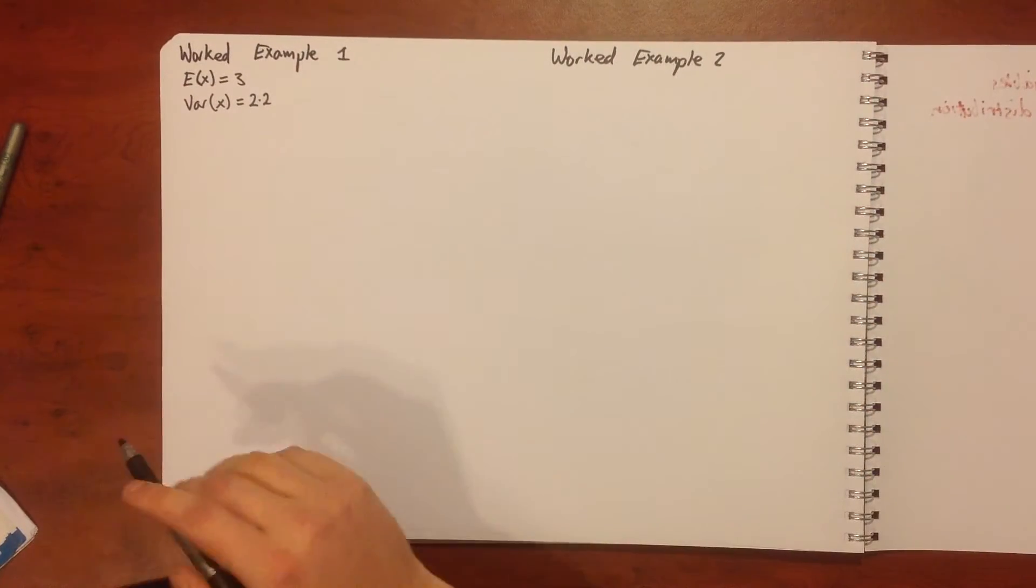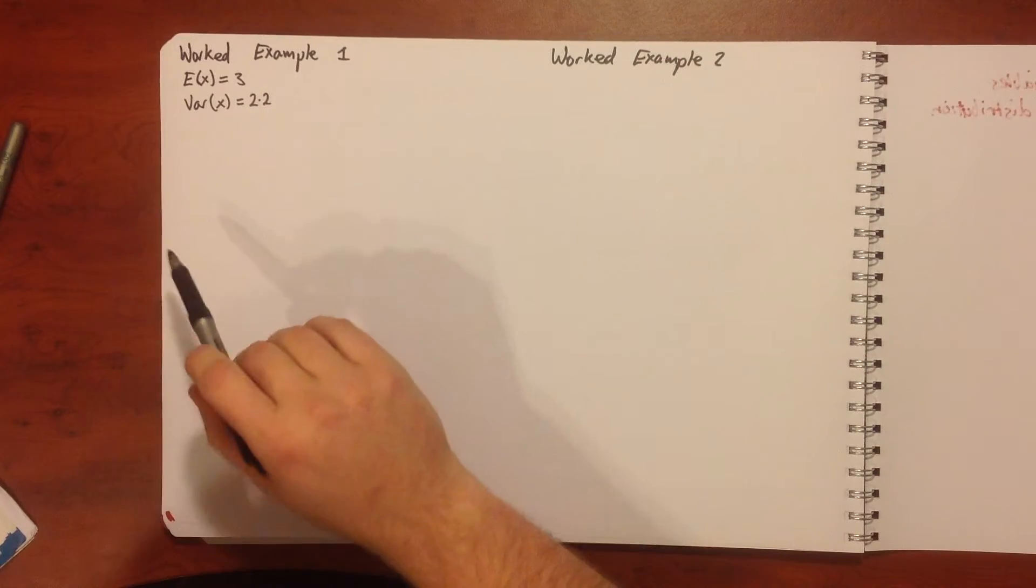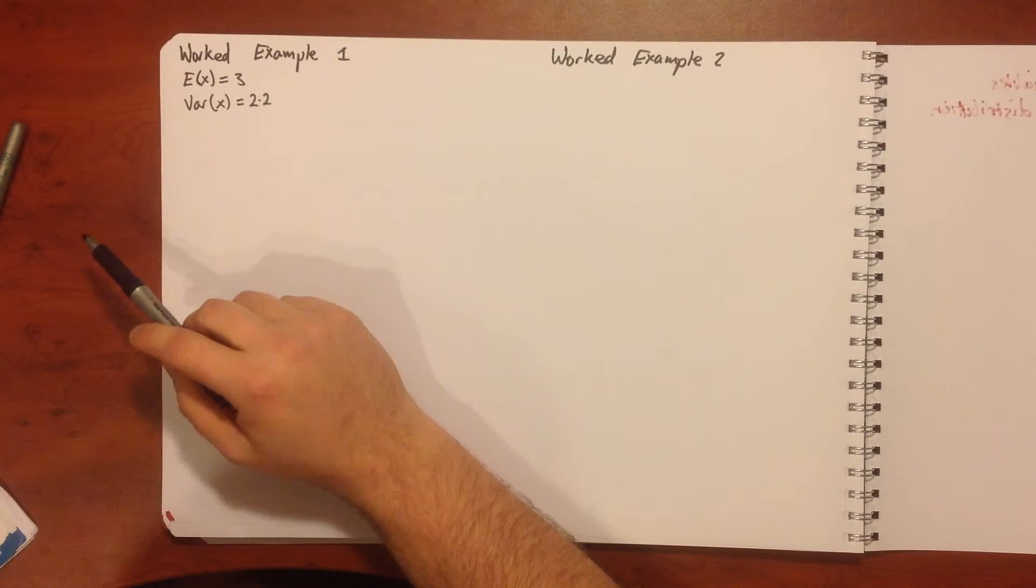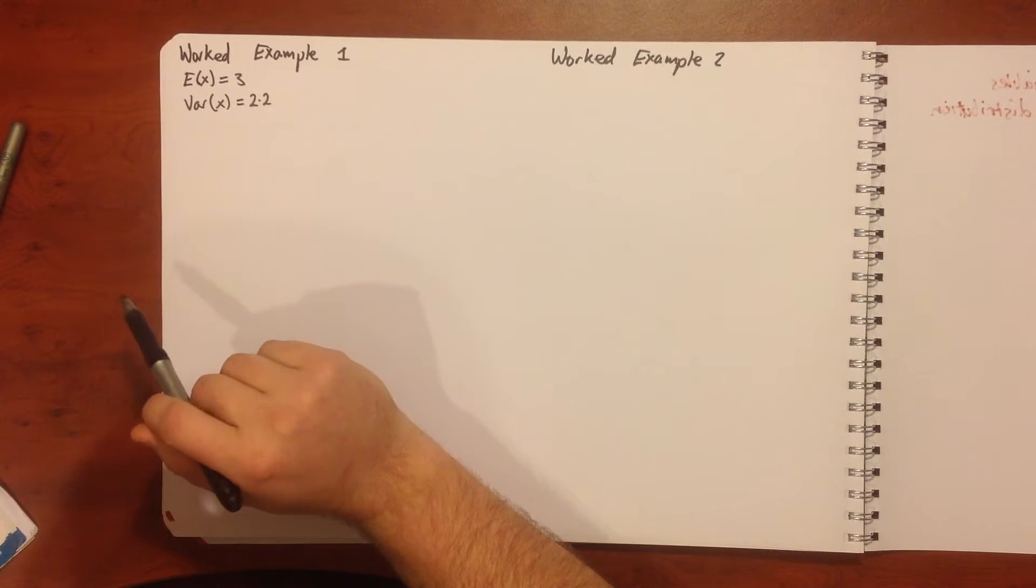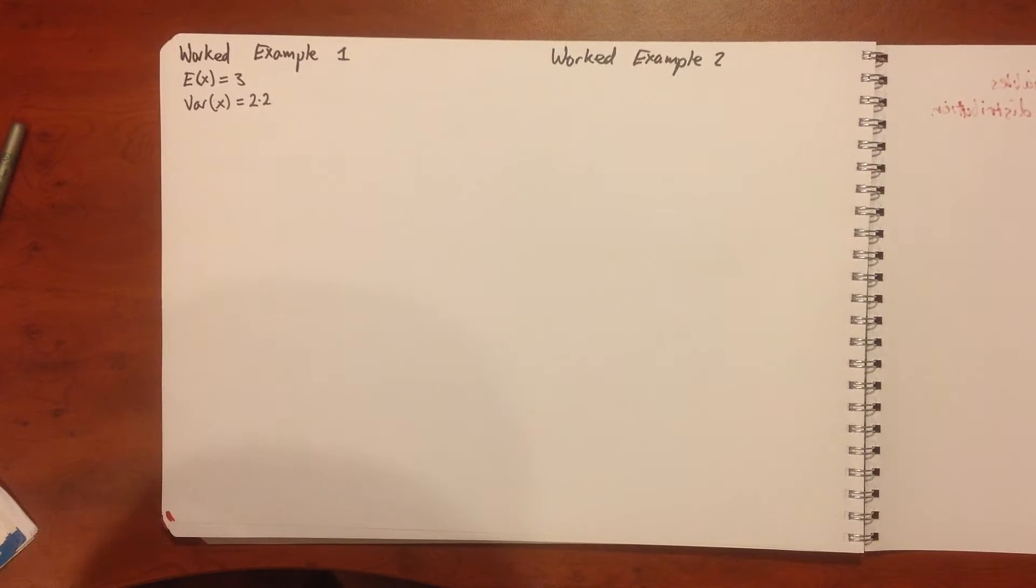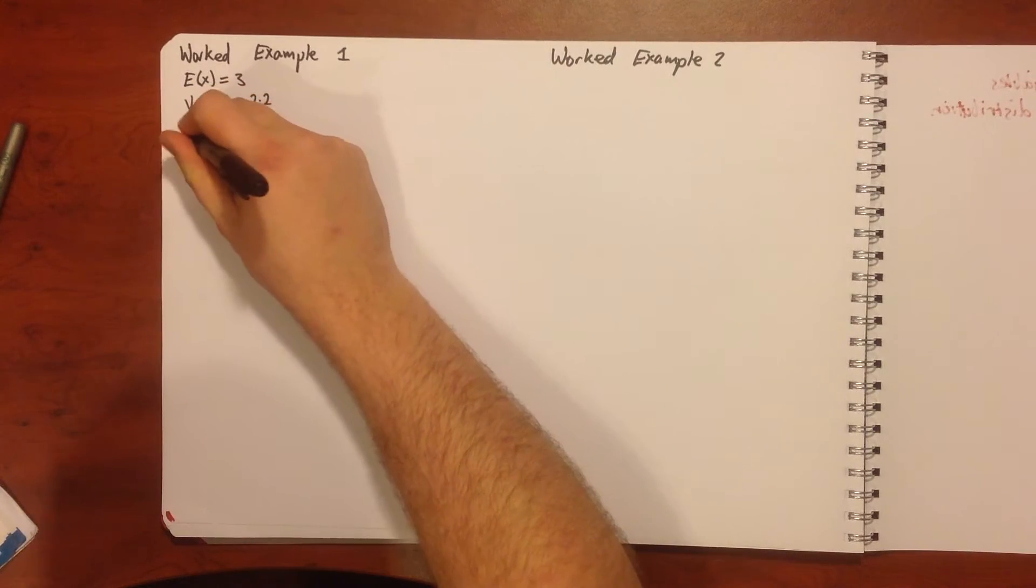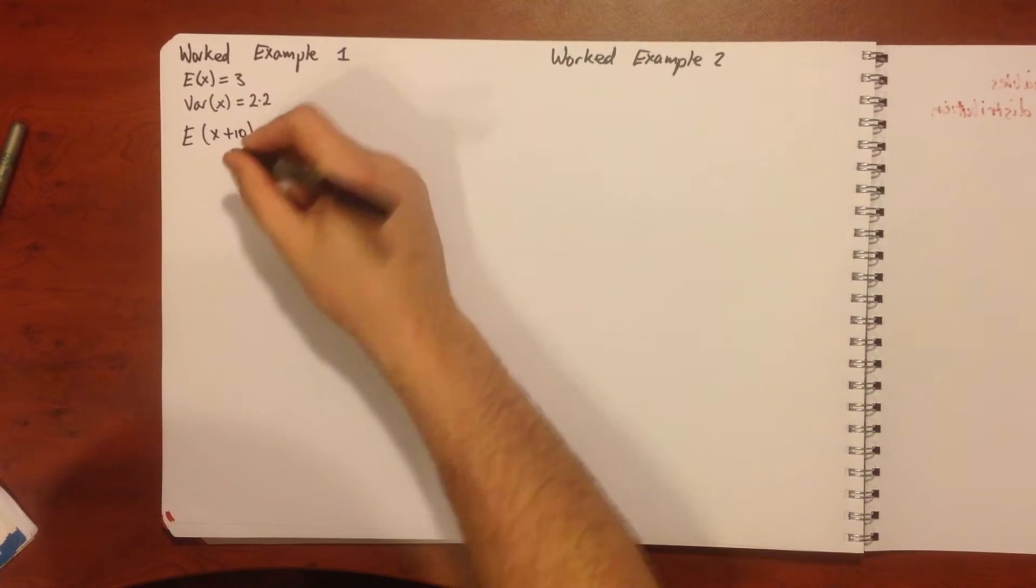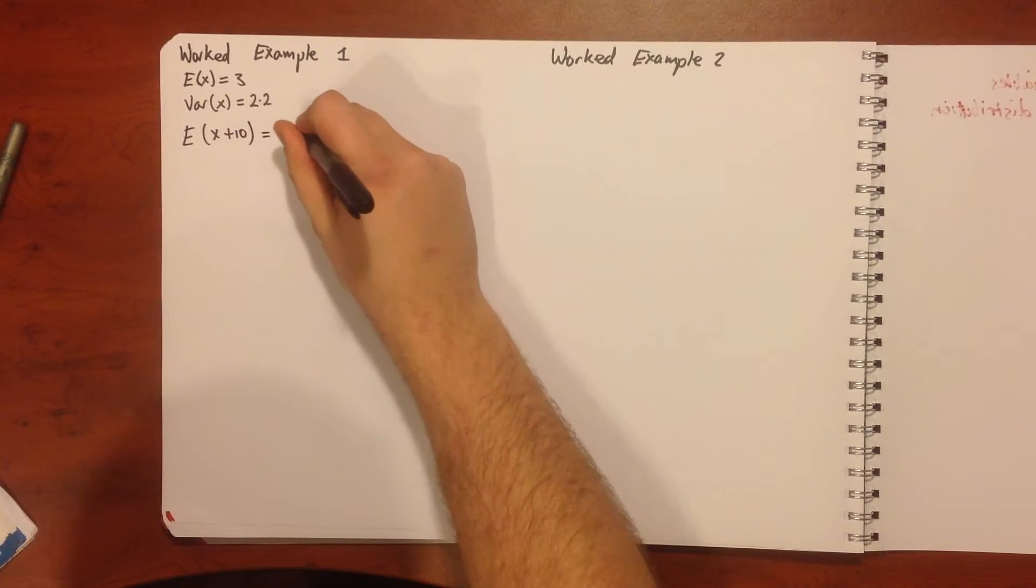We're going to have a look at worked example one. For a random variable x, the expected value of the distribution E of x is equal to 3, and the variance is equal to 2.2. For part a, if 10 is added to each score in the distribution, what's the new expected value and variance?